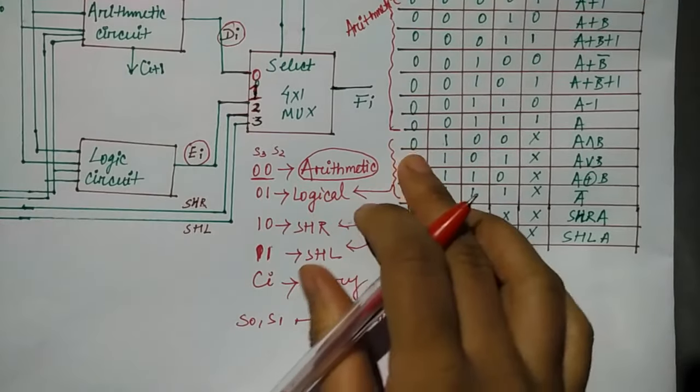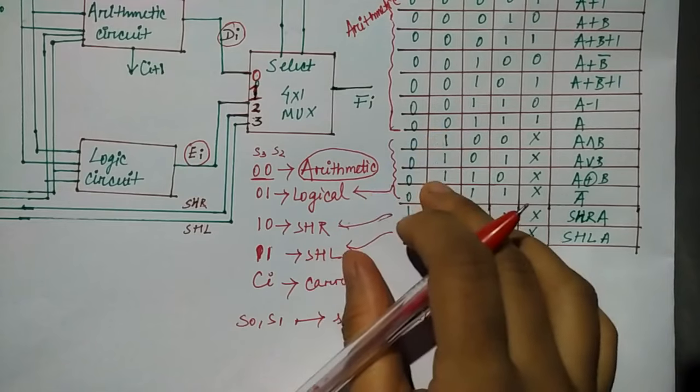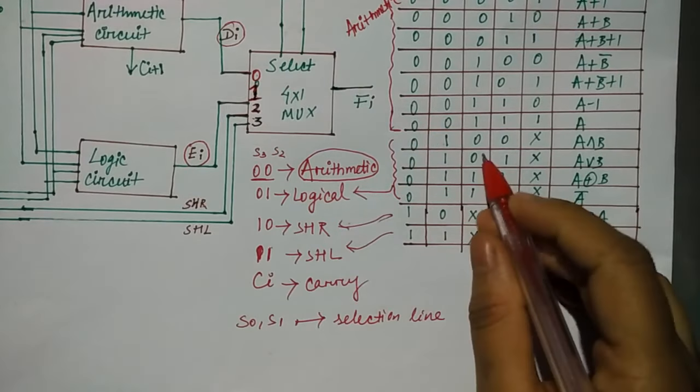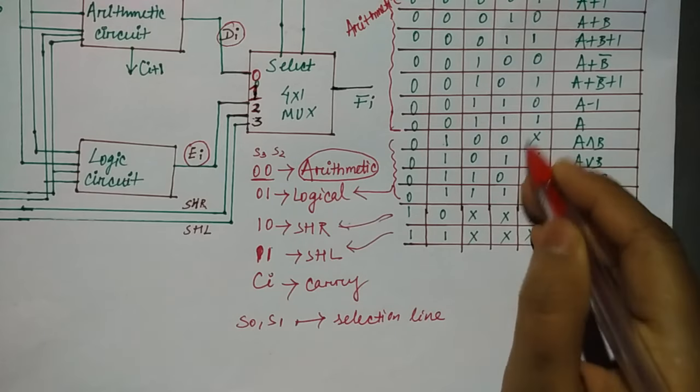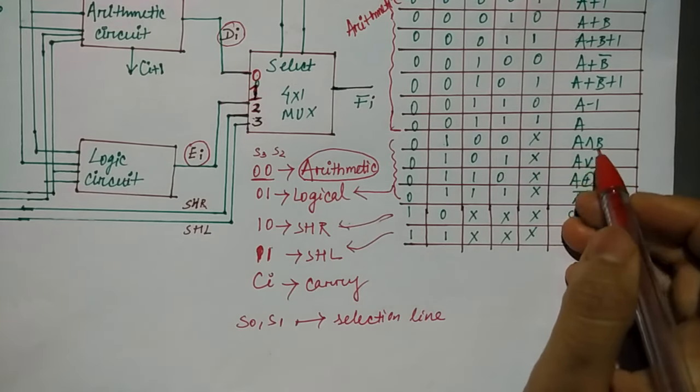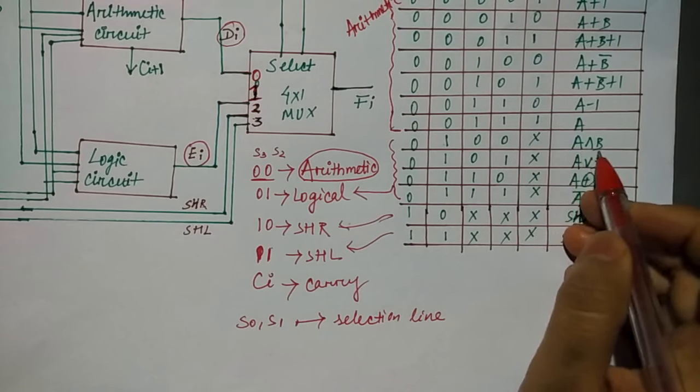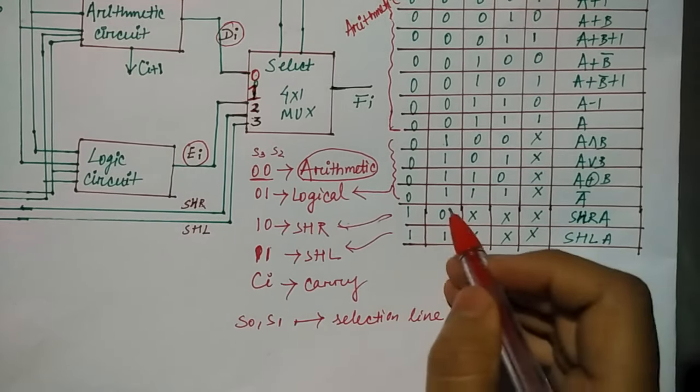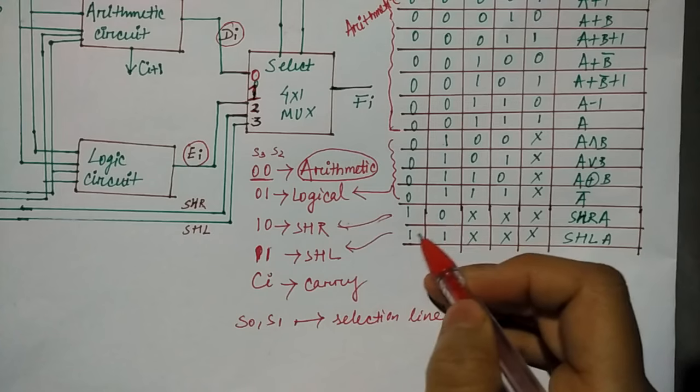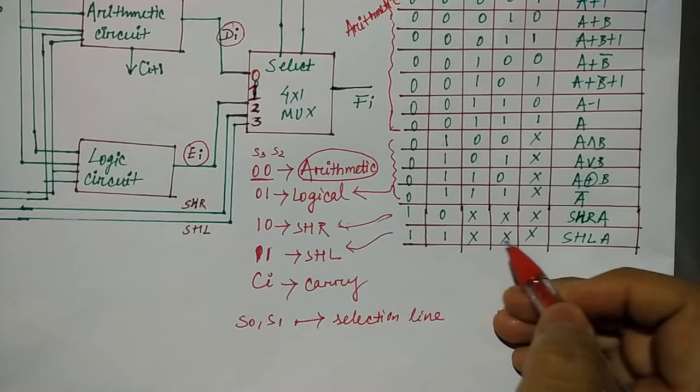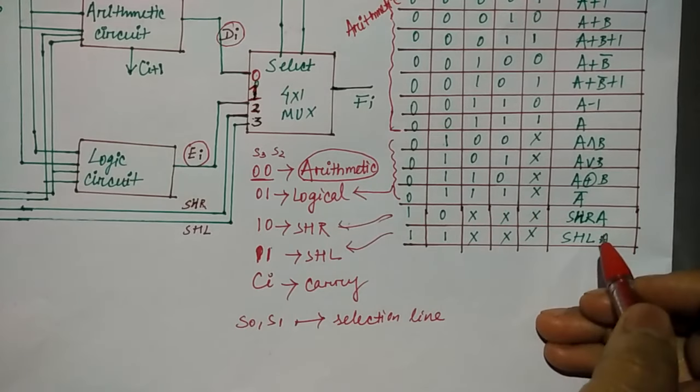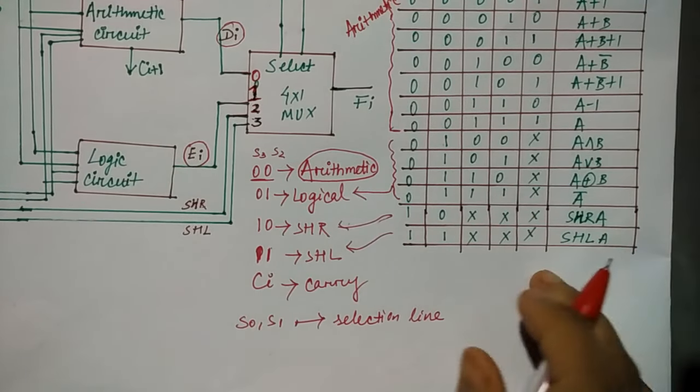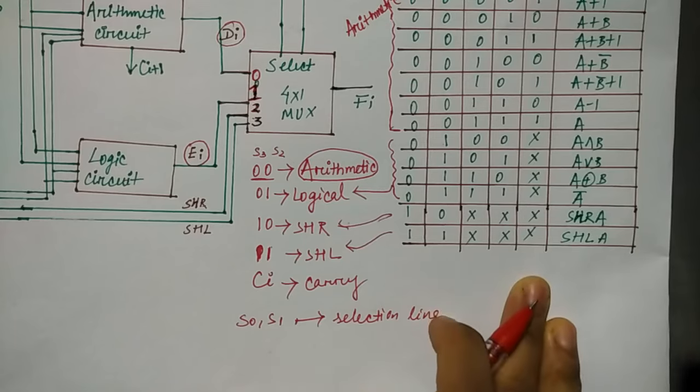When S3 and S2 are 0,1, this is a logical operation. For this, carry value will not count because this is not arithmetic operation. So this is A AND B, A OR B, A XOR B, A complement. And when it's 1,0 and 1,1, we don't consider S0, S1 and C. It's shift right and shift left operation.